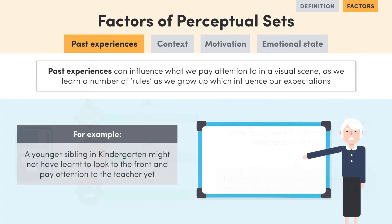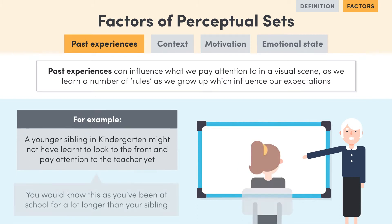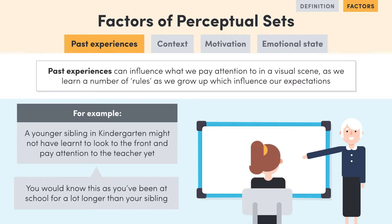For example, your younger sibling is in kindergarten and hasn't learnt that they must look at the front of the room and pay attention to the teacher. You, on the other hand, would know this because you've been at school for a lot longer than your sibling.